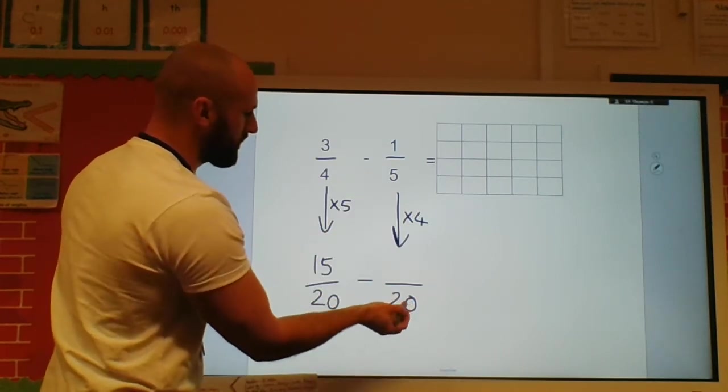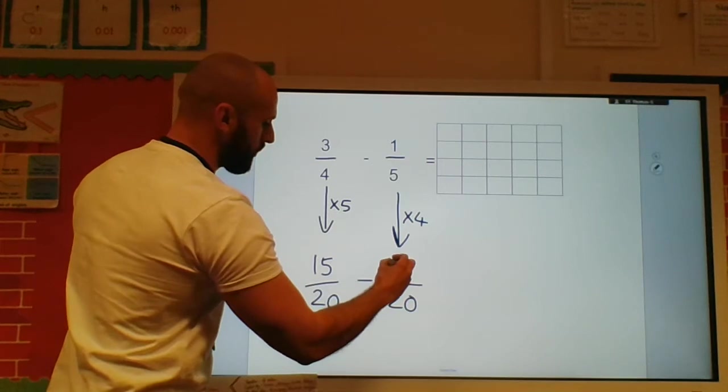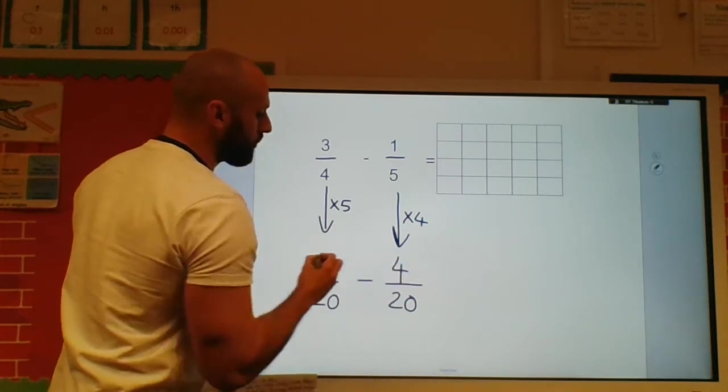Five times four gave me twenty. So one times four is four. Okay?